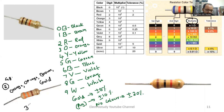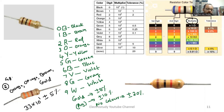Similarly the other color is also orange, so the digits are 3 and 3. While writing the third digit, it's a multiplier — 10 to the power of the brown code, which is 1. Gold gives tolerance of plus or minus 5%. So 33 × 10¹ = 330 ohm. The value of resistance is 330 ohm.